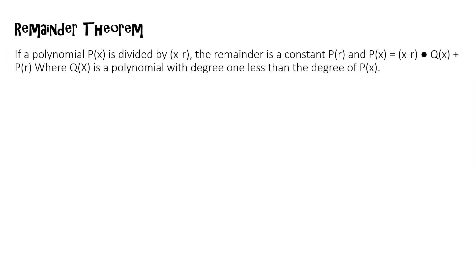First, we are going to define what the remainder theorem is. By definition, if a polynomial p(x) is divided by (x - r), the remainder is a constant p(r), and p(x) is equal to the product of (x - r) times q(x) plus p(r). This means that if we divide the polynomial p(x) by the divisor (x - r), it will yield a constant remainder p(r).